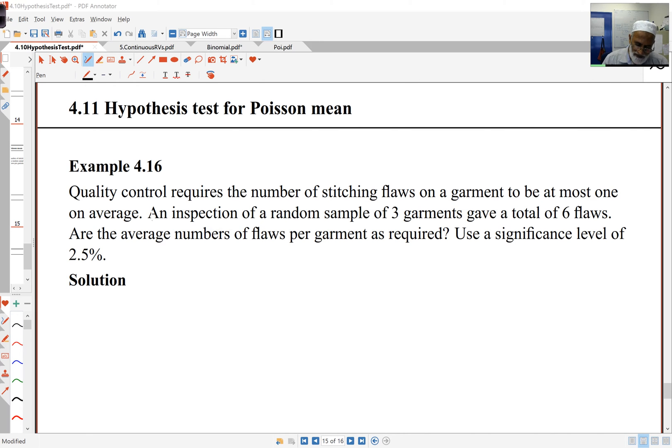Quality control requires the number of stitching flaws on a garment to be at most one on average. An inspection of a random sample of three garments gave a total of six flaws. The question here is, are the average number of flaws per garment as required? In other words, is it at most one per garment?